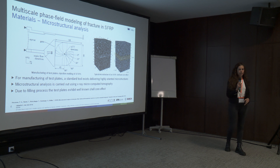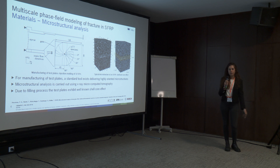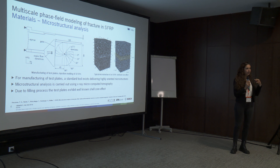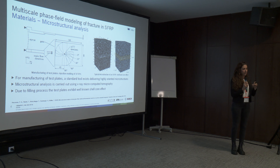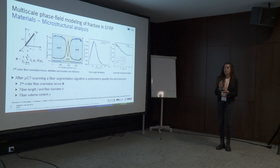First, let me introduce the materials we're dealing with. They are basically manufactured by injection molding, which is a process that promotes a high orientation of fibers. This is the typical microstructure we get in short fiber reinforced polymers. We are working with three different materials, all of them having a polymeric matrix reinforced by glass fibers.